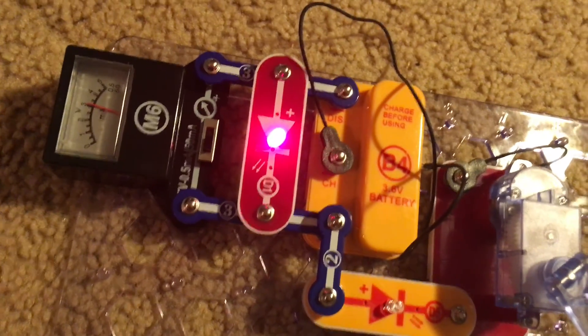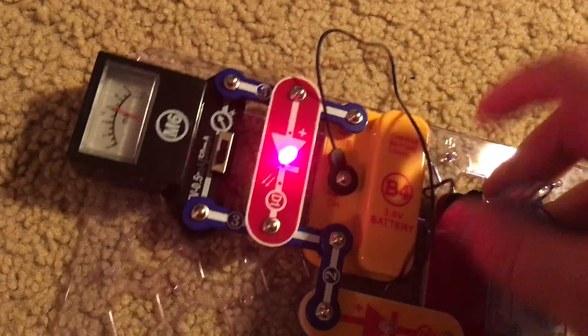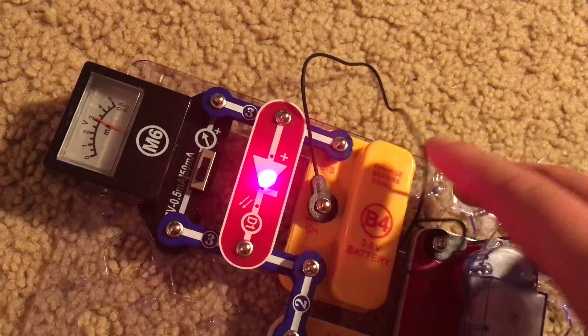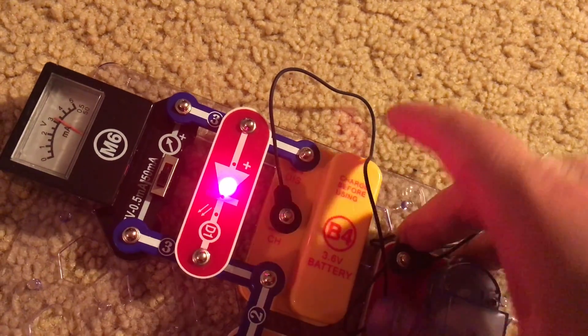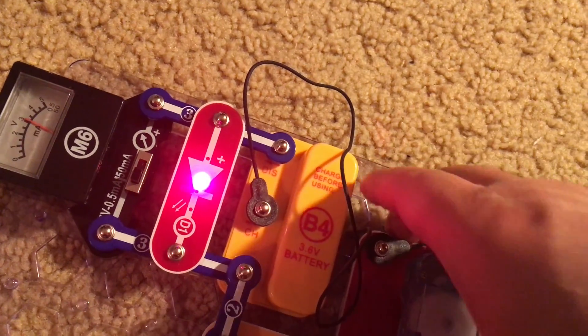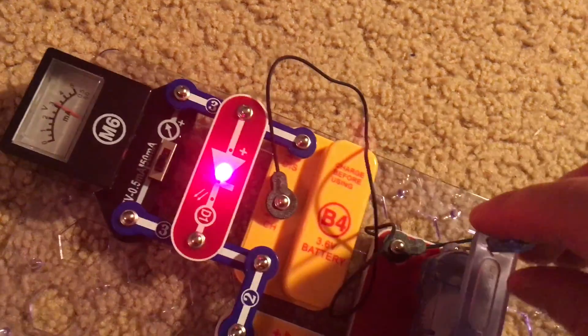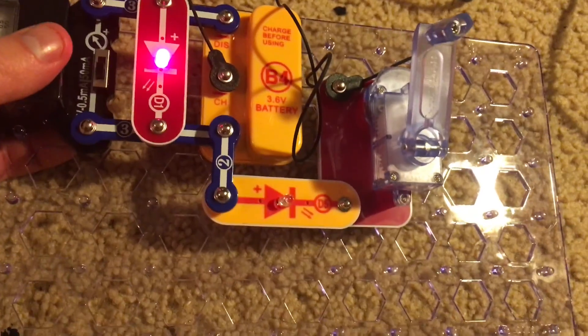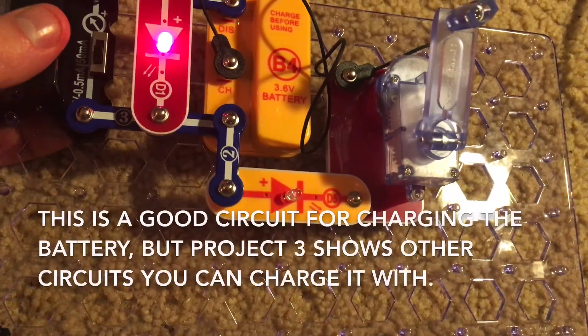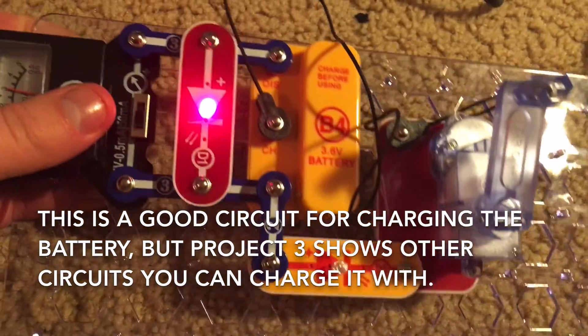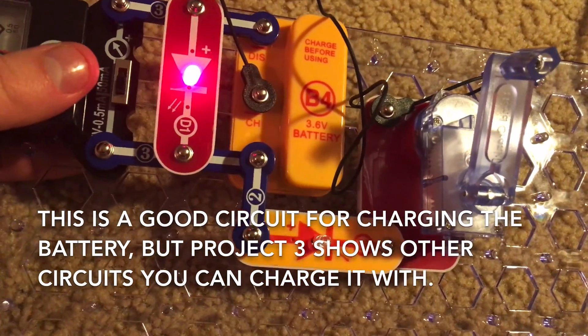This is the same case when charging. If you charge it the meter will probably quickly reach 3.6 volts but it will need a lot more in order to be fully charged and I recommend that you do that because you don't want the battery to simply die when you're using your projects. Make sure you turn the crank clockwise and this is a good circuit to charge it. But project 3 will show you a few other ways to charge the battery.